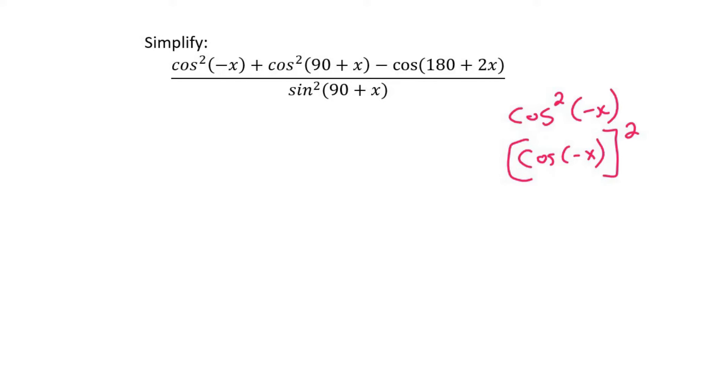Now forget about the square and just pretend that the only thing you need to look at is this. So if we look on our cosine diagram, we know that we've got 180 minus x, 180 plus x and 360 minus x. There is no minus x. So what we do is we add 360 degrees.